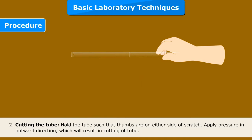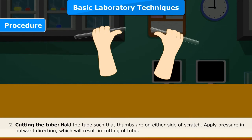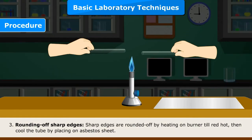Procedure 2: Cutting the tube. Hold the tube such that thumbs are on either side of the scratch. Apply pressure in the outward direction, which will result in cutting of the tube.